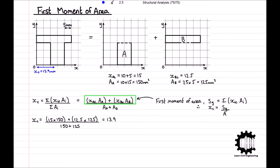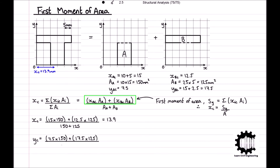Now we repeat this process for the Y coordinate. Using the same knowledge that the centroid of a rectangle lies at its center, the Y coordinate of the centroid of rectangle A is 7.5 and the Y coordinate of the centroid of rectangle B is 17.5, with the same areas as before. Therefore: YC = (7.5 × 150 + 17.5 × 125) / (150 + 125) = 12. So the centroid of the entire section is 12 millimeters away from the X axis, and the centroid of the entire T section is located at (XC, YC) = (13.9, 12).